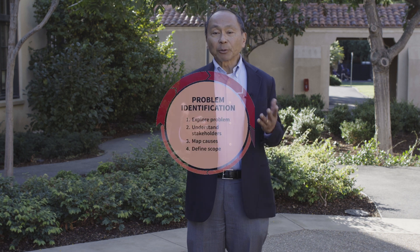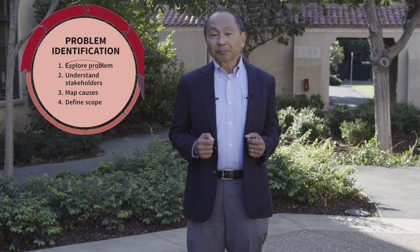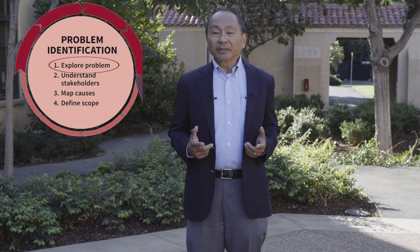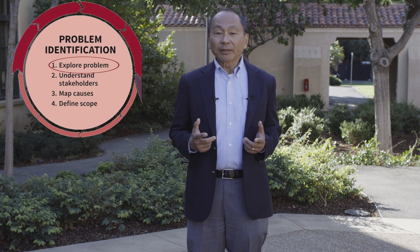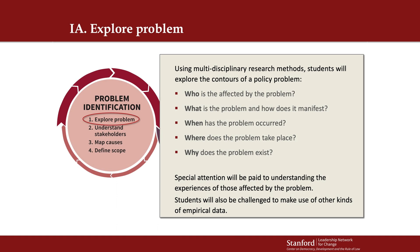No problem can be solved without building a coalition. So identifying real problems that important groups of people want to solve is an important point of departure. The first step in problem identification is to explore the problem by gathering as much information as possible about it. This involves diving into local context.